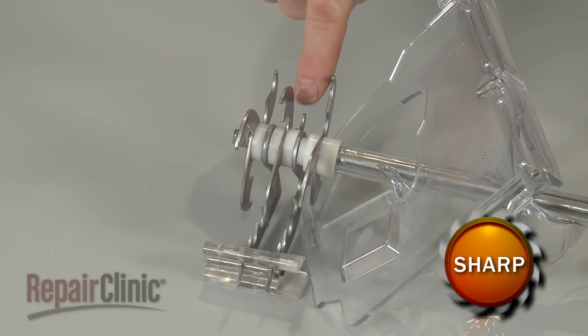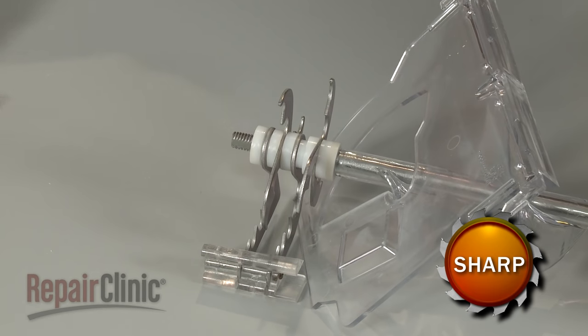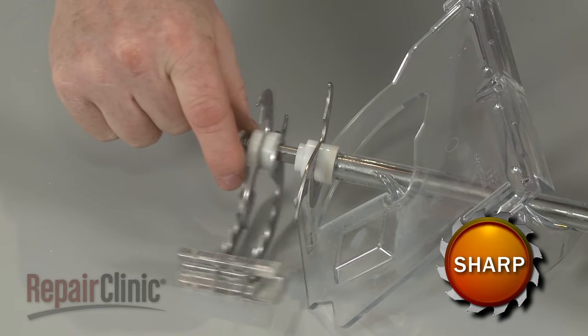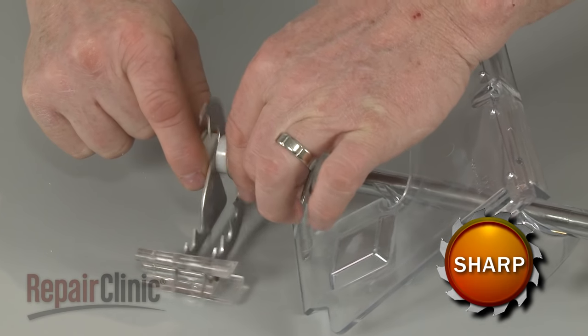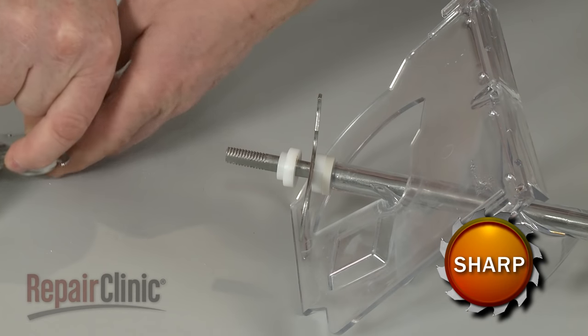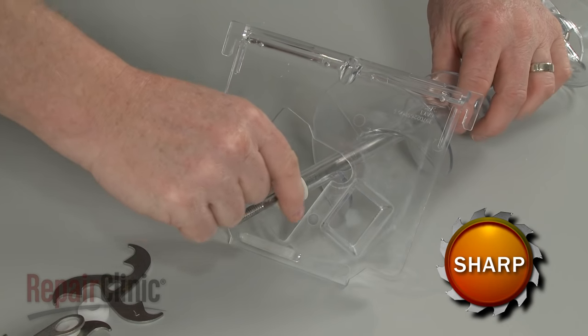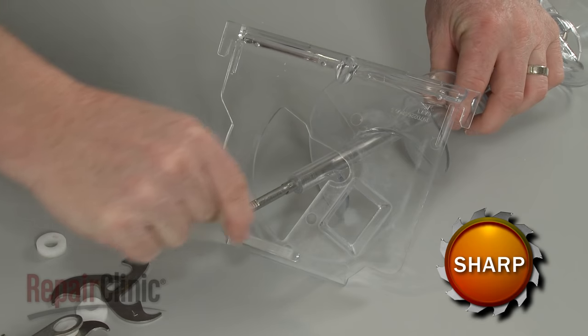Note the orientation of the auger components, then remove them. Once the blade components are detached, you can remove the cover plate from the old auger.